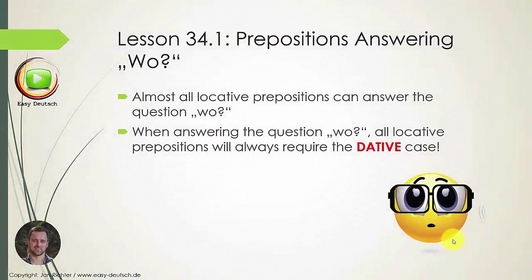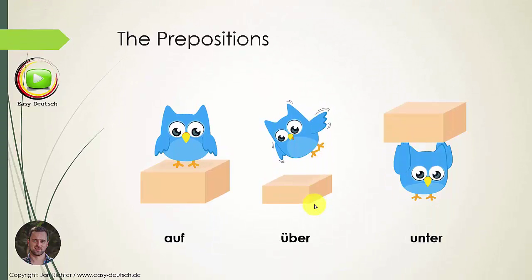Welcome to the first part of the lesson: prepositions answering the question Wo? — Where? Before we start with the actual prepositions, let's talk about the case you have to use when asking with wo. If you ask for a noun with wo, you have to use dative case. All prepositions used with wo require dative case — Wo should always trigger dative case in your head.